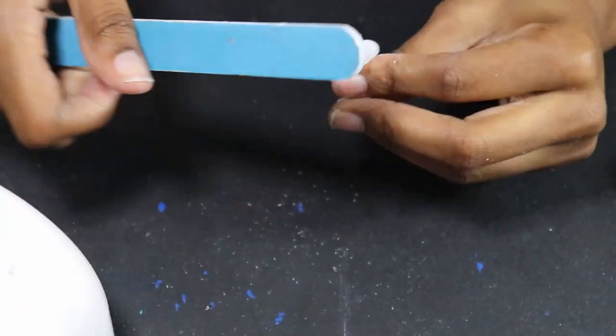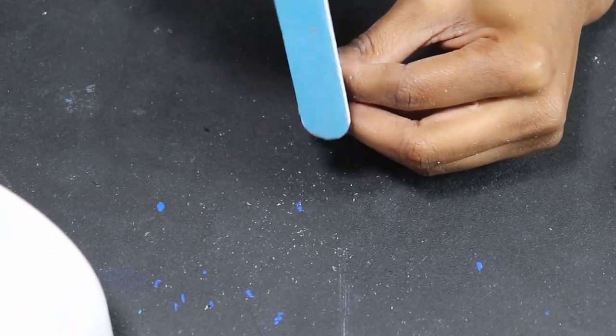Once you've done that you want to go ahead and buff away all the shine, as well as file off the little plastic bit that hangs on the end.